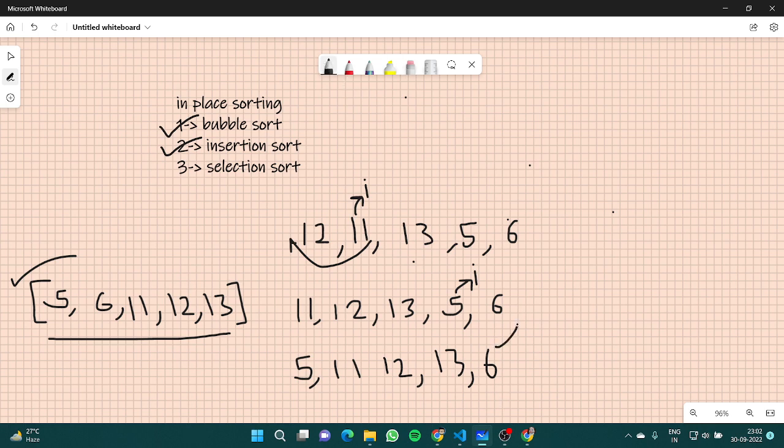We'll have i here. i is currently at index 4. j would be here at index 3. Now what we will have is we will check array[j] and array[i]. Obviously array[i] is smaller than array[j], so we will move 13 towards here.